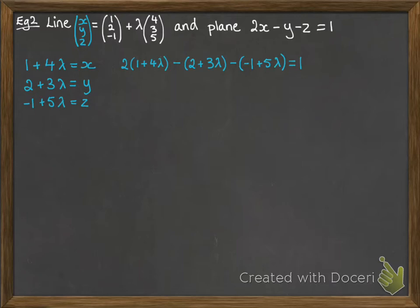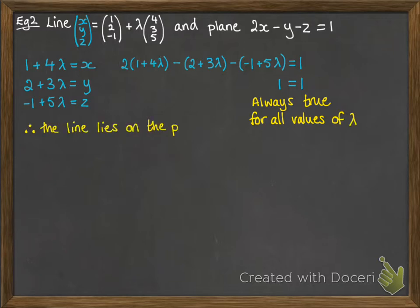Now, the previous example gave us the intersection point between the line and the plane. It happened in one particular place, so that was a line that goes through the plane. This one's different. If you multiply out those brackets and simplify, you get this situation where 1 equals 1. Now, since this is always true for any value of lambda, this means that the line lies on the plane, so there are infinitely many points of intersection.